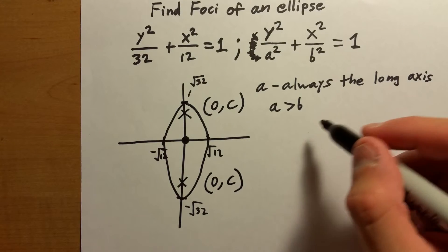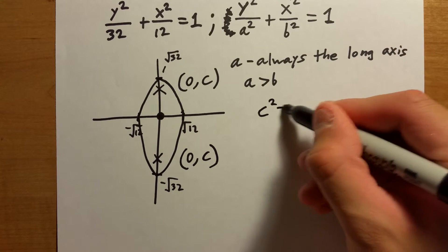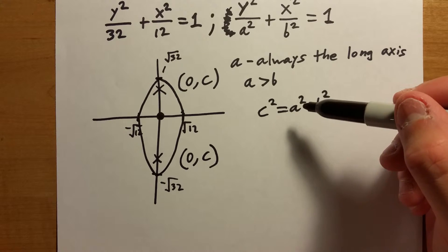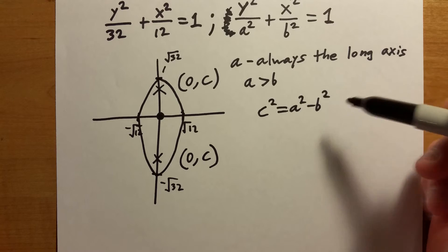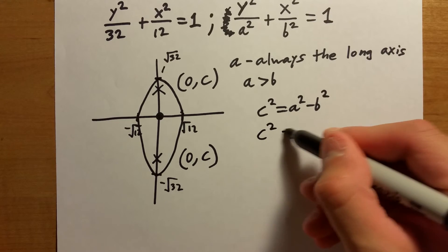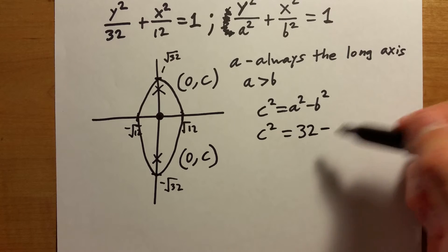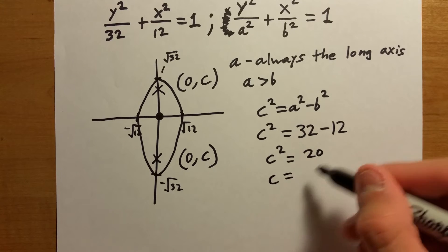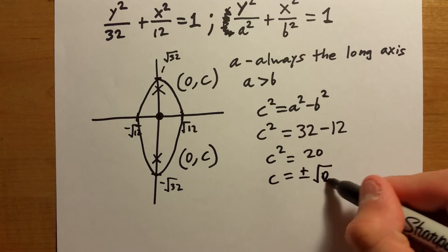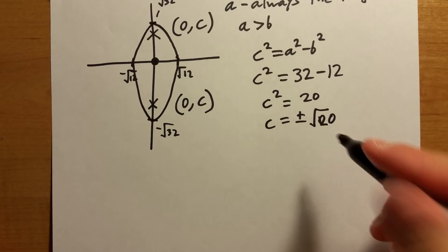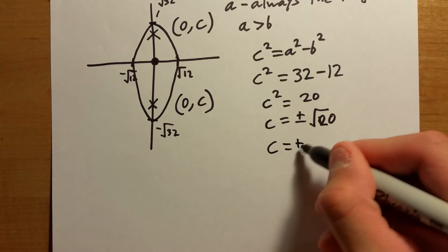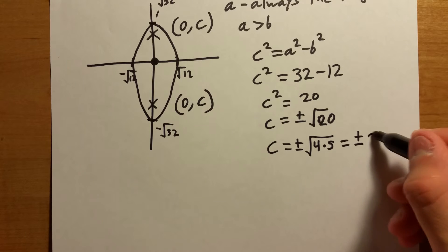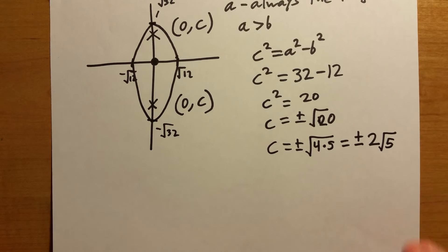Now we can use the formula c squared equals a squared minus b squared — that is, foci squared equals the major axis squared minus the shorter axis squared. Plugging in the numbers: c squared equals 32 minus 12, so c squared equals 20, meaning c equals plus or minus the square root of 20. The square root of 20 can break down into 4 times 5, giving us plus or minus 2 times the square root of 5.